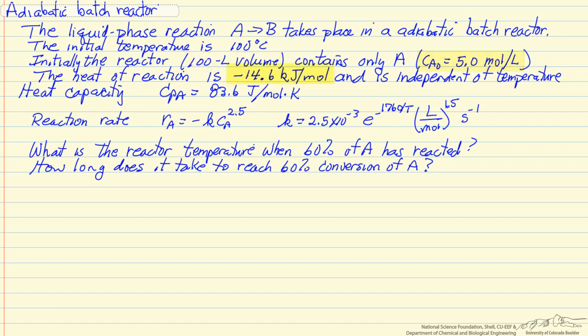And then we have things like heat of reaction, heat capacity, reaction rate in terms of concentration and the rate constant, and of course the rate constant has an exponential temperature dependence. The two questions we want to answer are what is the reactor temperature when 60% of A has reacted, and then how long does it take to reach a conversion of 60%.